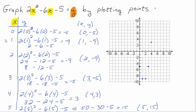We didn't try a negative — we should probably do a negative value. But I can start to see the shape here. If I know anything about quadratic equations — quadratic meaning I have an x-squared term and y to the first power — I know it's going to make this shape called a parabola, like a U shape. If the number in front of x squared is positive, it opens up. If it's negative, it opens down.